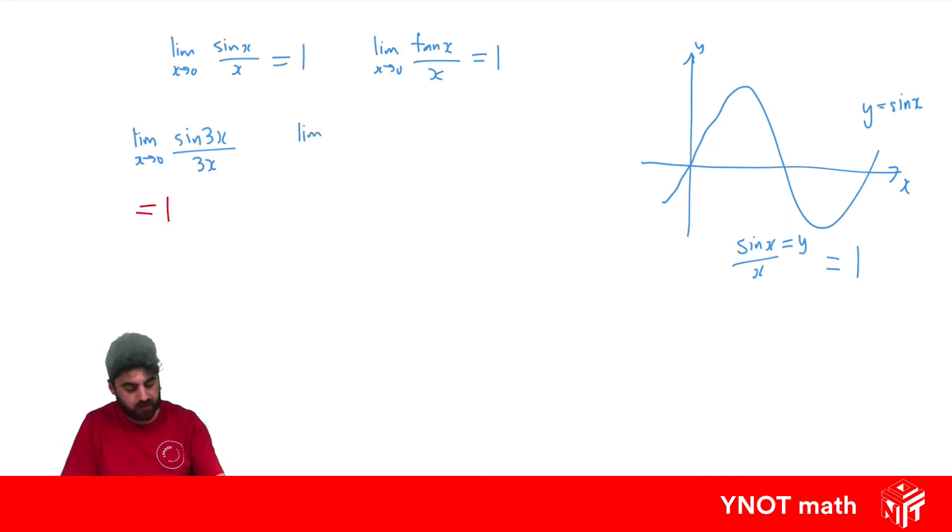What about the limit as x approaches zero of sine 4x over 2x? Well, these angles aren't the same, so what can we do here? Well, it'd be nice if this was 2 times 2, which is 4. So we're dividing this fraction by 4, which means on the outside of our limit we multiply by 2. So now we're left with 2 times all of this, and since 2 times 2 is 4 to give us 4x, these will be the same, and the limit is just equal to 1, so we get 2.